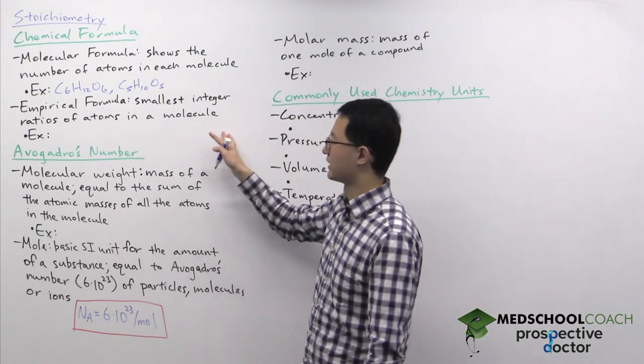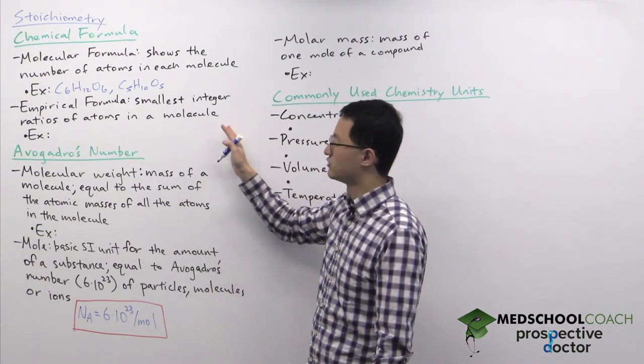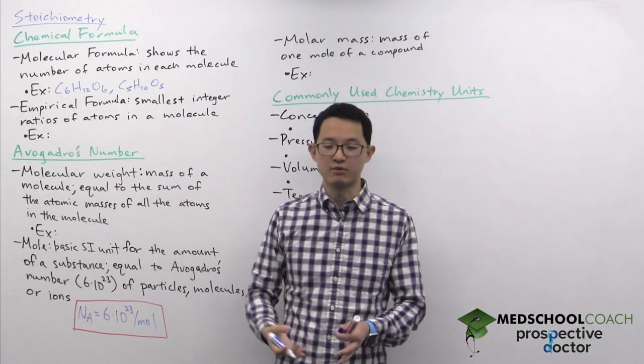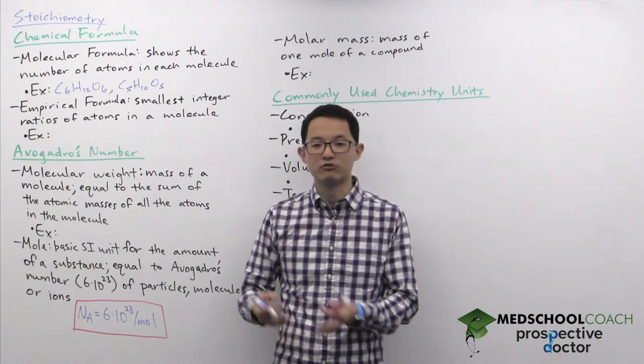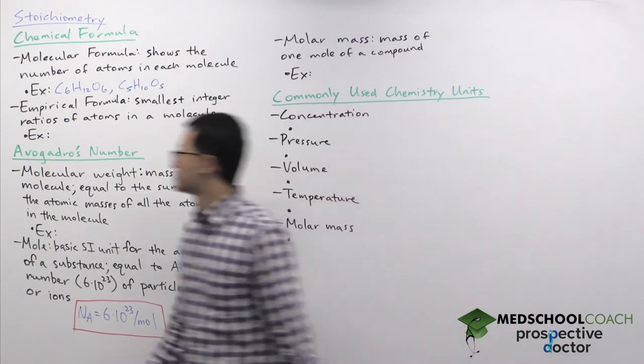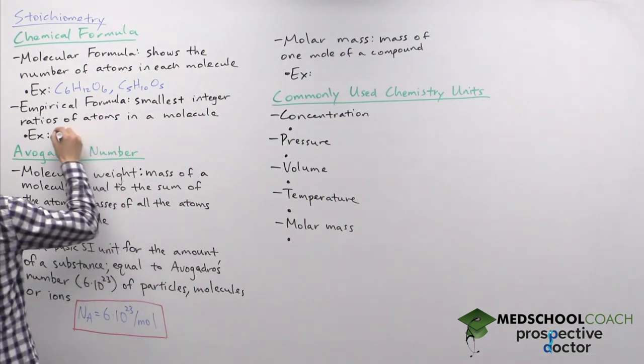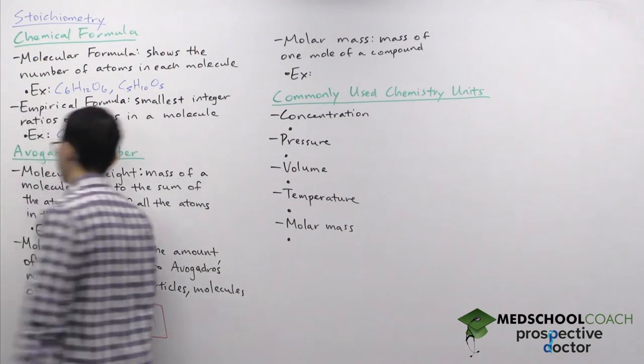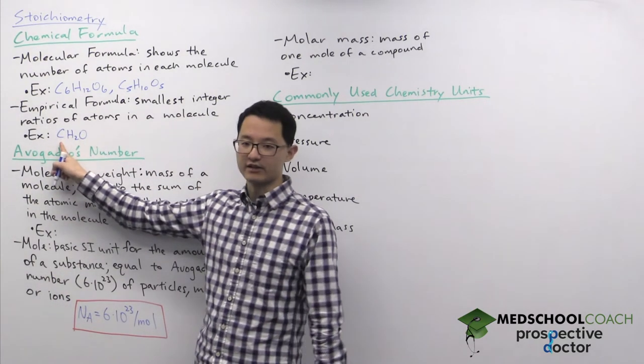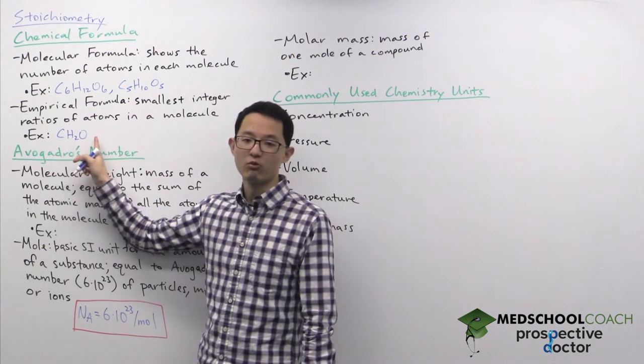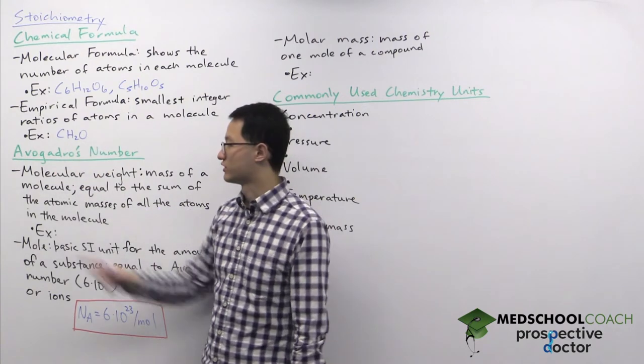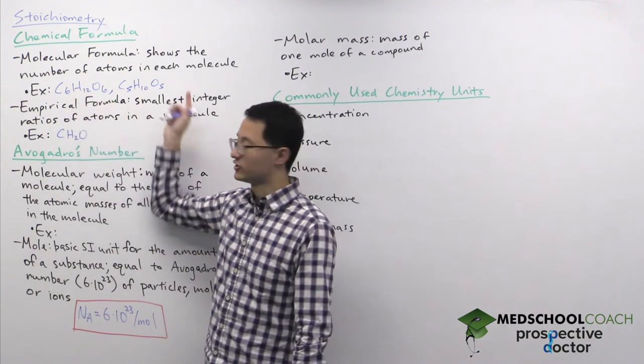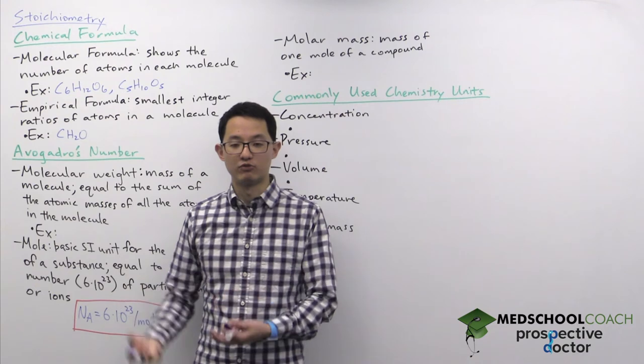The empirical formula is the smallest integer ratios of atoms in a molecule. So instead of describing the number of atoms in each molecule, it tells you about the ratio of the atoms to each other. So for both glucose and ribose, they have an empirical formula of CH2O because for every carbon atom there are two hydrogen atoms and one oxygen atom. And you can see the same one to two to one ratio in both glucose and ribose.